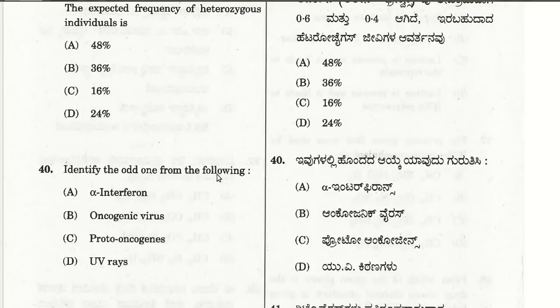The fortieth question: identify the odd one from the following. The odd one is interferon, whereas oncogenic virus, proto-oncogenes, and UV rays are all related to cancer causation. Interferon is not in that category.